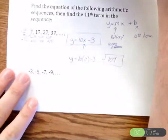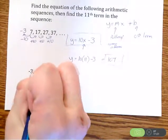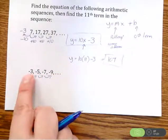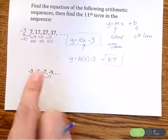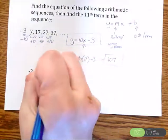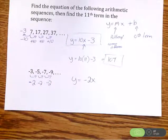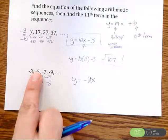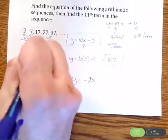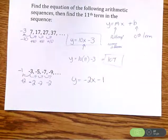One more example: the arithmetic sequence negative 3, negative 5, negative 7, negative 9. The numbers are getting smaller, so we're subtracting. From negative 3 to negative 5, we subtract 2. Negative 5 to negative 7, subtract 2. Negative 7 to negative 9, subtract 2. So the equation is y equals negative 2x plus b. To find the zeroth term, I work backwards — going left means adding 2: negative 3 plus 2 is negative 1. So the equation is y equals negative 2x minus 1.